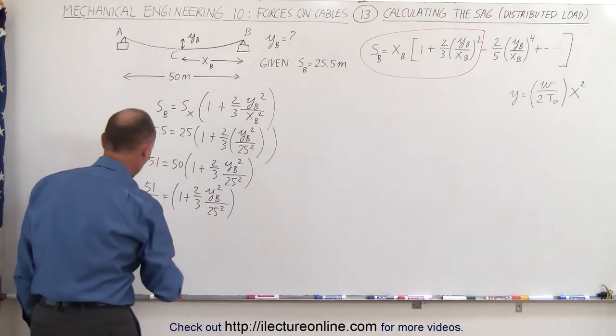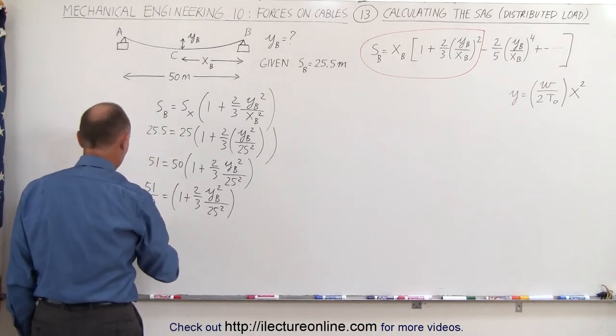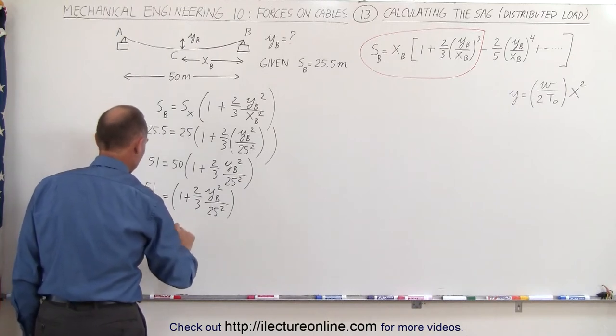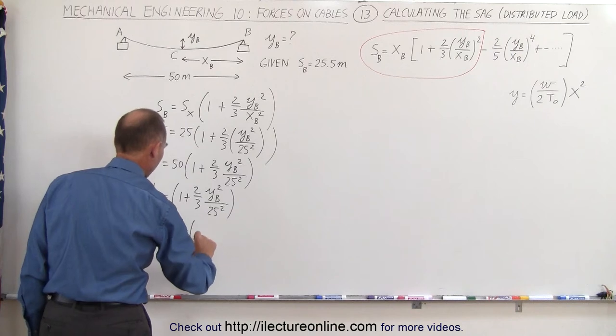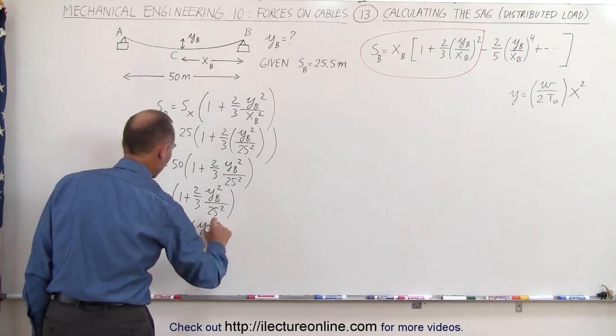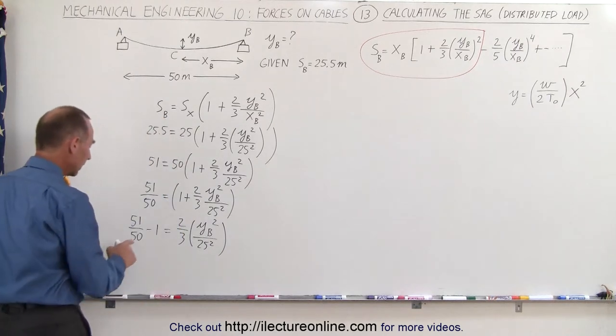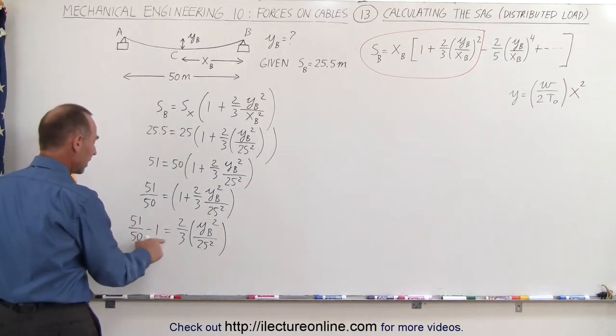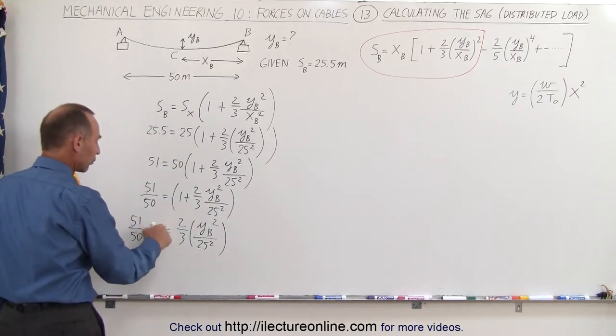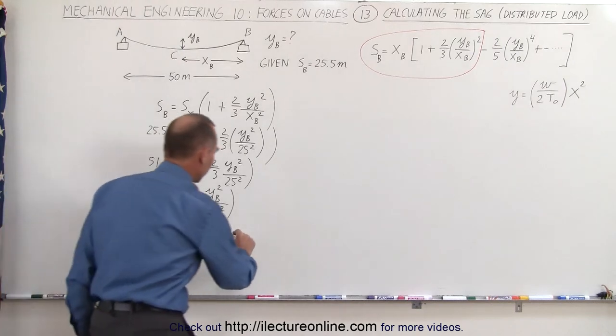Now we subtract the one from both sides, so this would be 51 over 50 minus one equals two-thirds times Y sub B squared over 25 squared. This would be one out of 50, and then we're going to multiply that times three over two to get rid of two-thirds. Let's move over this way.